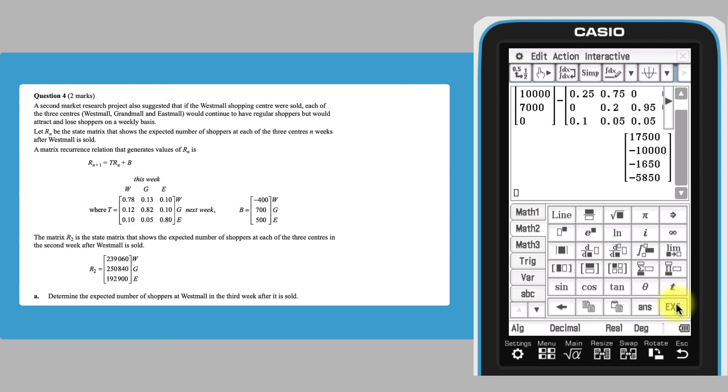A similar arithmetic process can be used to answer this question. The correct number of shoppers is 237,966.